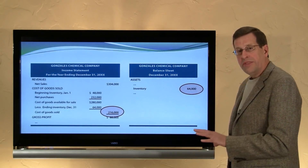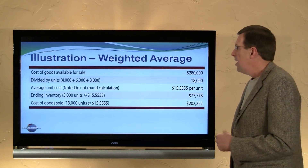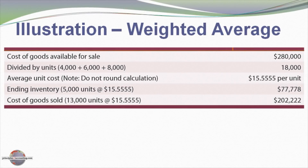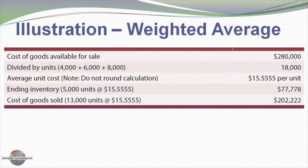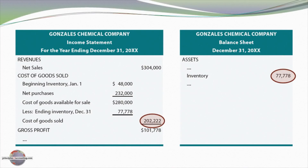These same examples are in the textbook for you to look at in more detail. The weighted average method takes a different approach. We take our $280,000 of cost of goods available for sale divided by a total of 18,000 units — that's 4,000 from beginning inventory plus purchases of 6,000 and 8,000 respectively — giving us an average cost of $15.5555 per unit. It's best to carry your decimal out quite a ways when doing weighted average calculations. Our 5,000 units in ending inventory at $15.5555 gives ending inventory of $77,778, and cost of goods sold is 13,000 times that same per unit price, equaling $202,222. The sum of these two amounts equals our $280,000 goods available for sale.